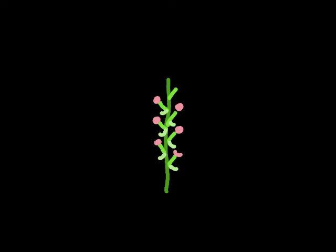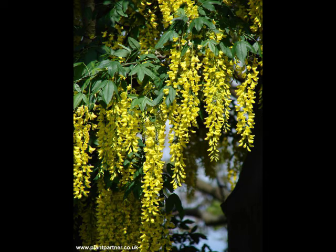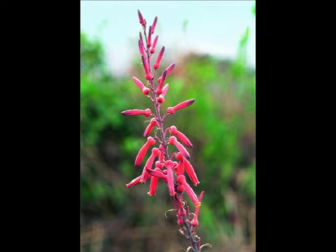The next one we're going to look at is the raceme. The raceme is where you've got the peduncle — the main stalk — and there are little pedicels, and on the end of the pedicels are the flowers. We've got some examples here: the laburnum is a very good example of a raceme, and the alawi is also a very good example of a raceme.